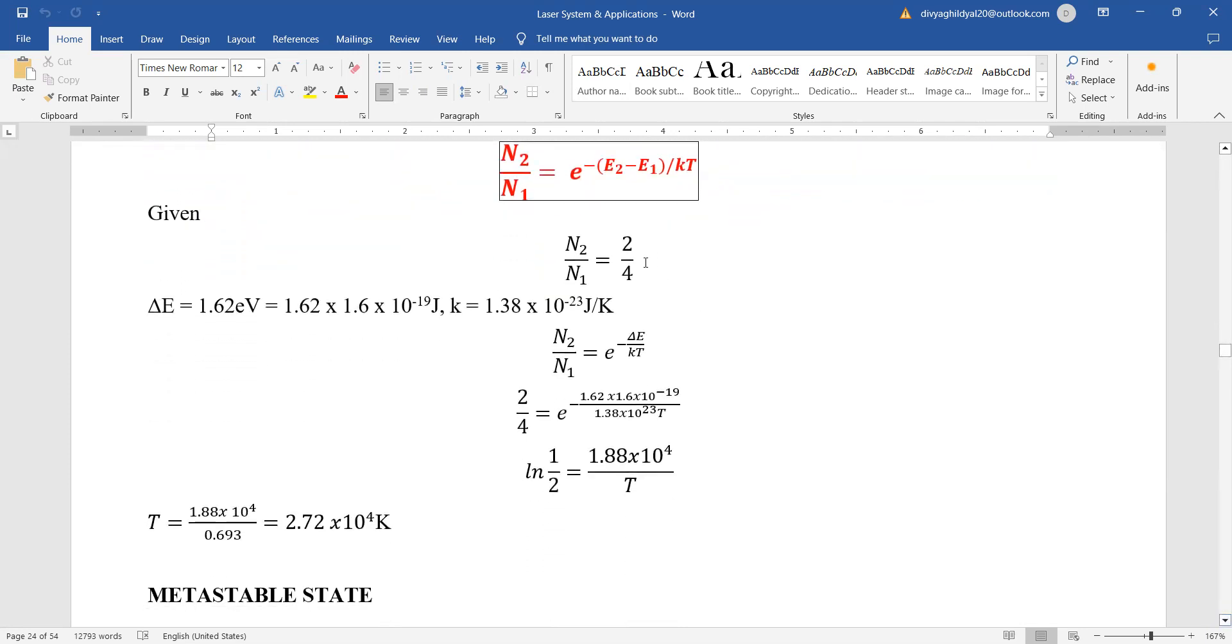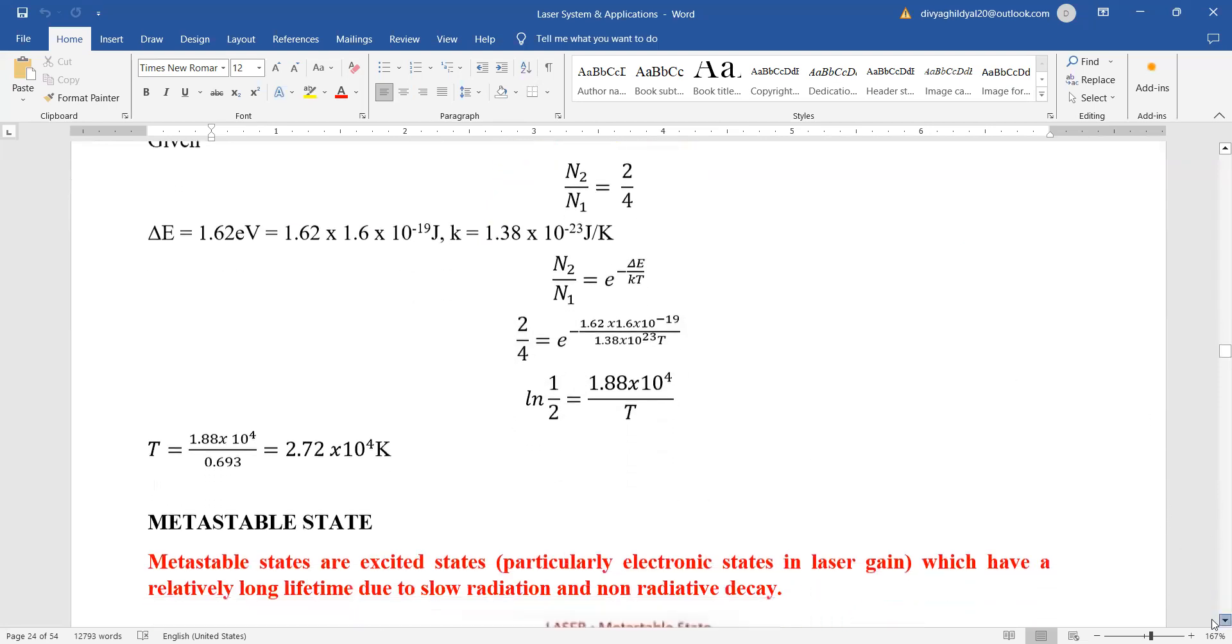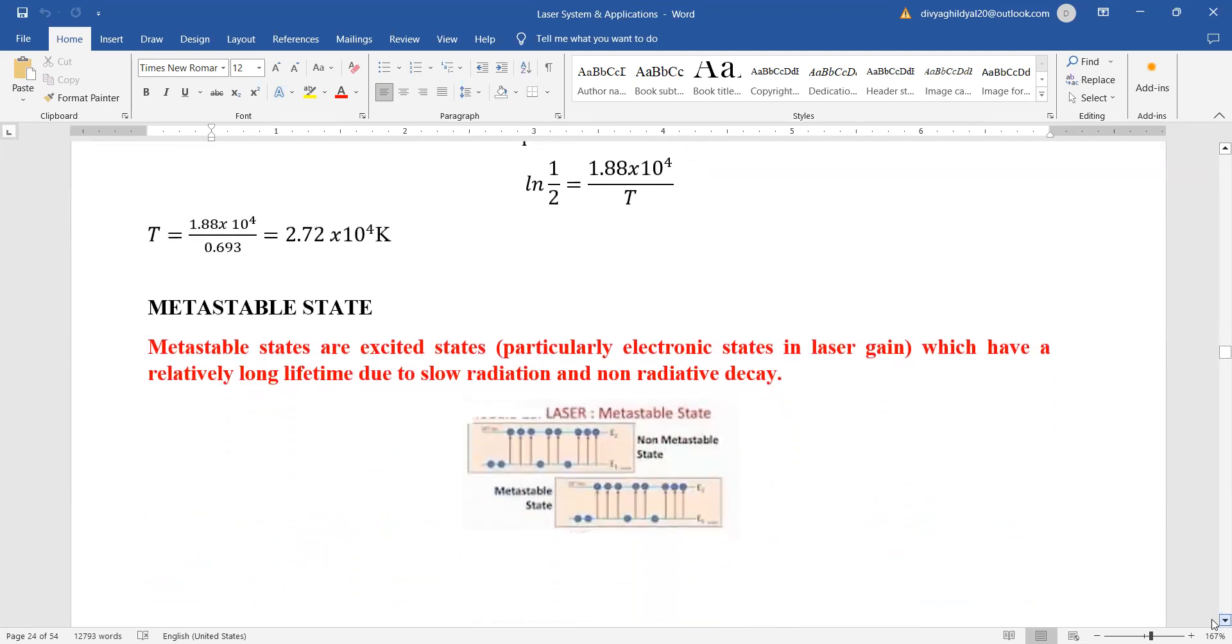You put the ratio of your population inversion and you change the energy which has been given to you in electron volt into joule. The value for Boltzmann constant is 1.38 into 10 to the power of minus 23 joule per Kelvin. Once you put these values here with a simple calculator, you find out the value of temperature.